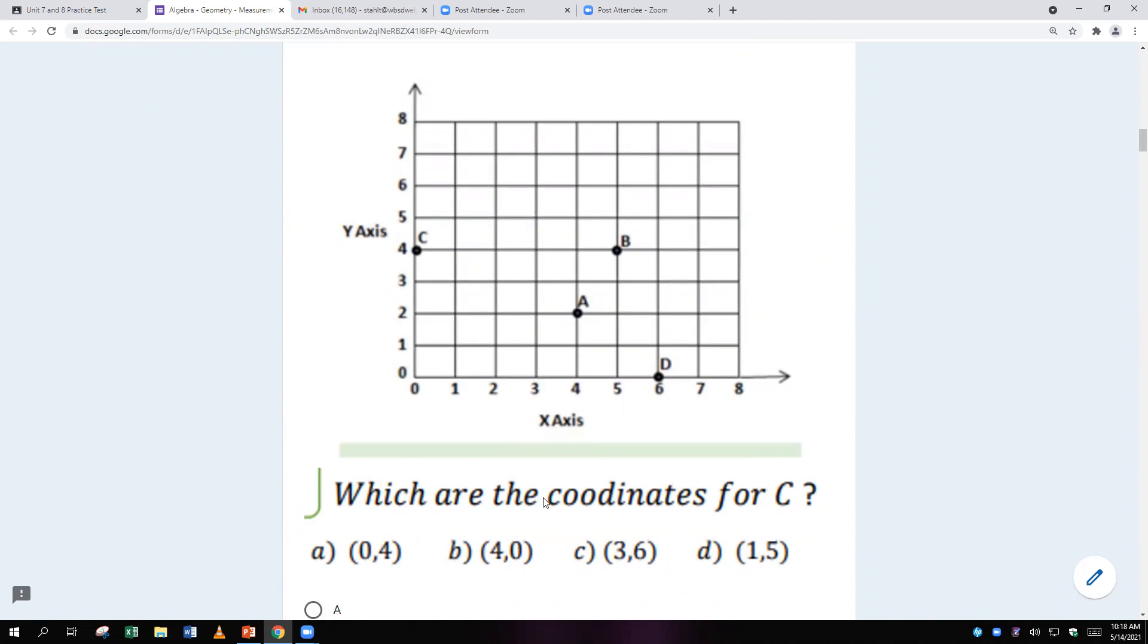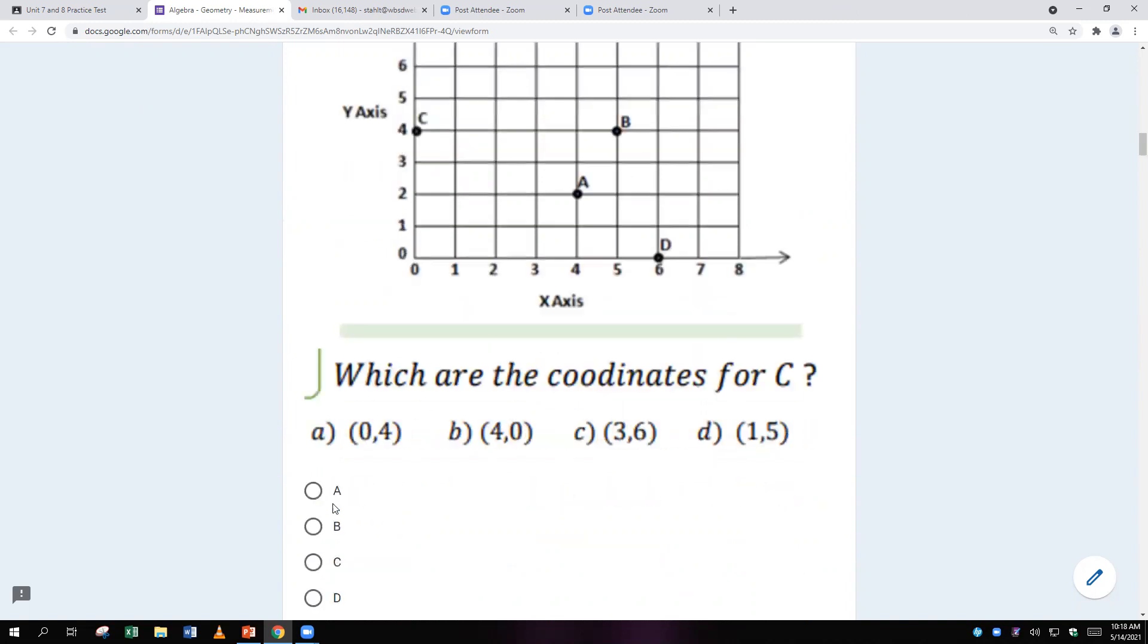Which are the coordinates for C? So here's C. Now, how far do you go over? None. And then you go straight up 4, so it's 0, 4, which is A, 0, 4.